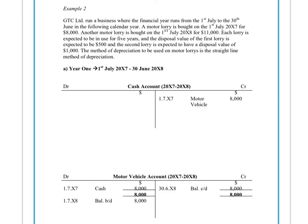Now over to the straight line method of depreciation. Here we're going to look at a different company that has two lorries they use to deliver their products. In the first year there is one lorry worth £8,000, and in the second year they add another lorry worth £11,000. The first year begins on the 1st of July X7, and when we buy the motor vehicle it's credited from the cash account and debited into the motor vehicle asset account. At the end of the financial year — 30th of June X8 — we have a balance carried down and brought down of £8,000.